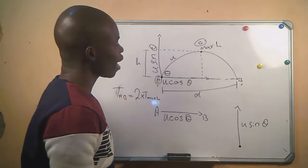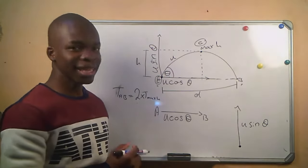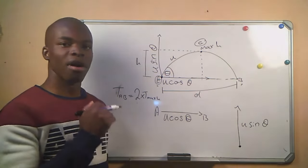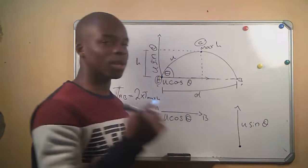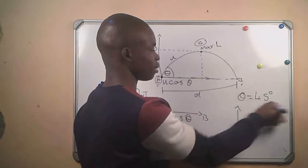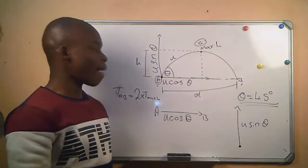Whenever you are given a question where they do not give you the angle and they say calculate the maximum distance, you must know that the angle will always be 45°. Whenever you are told to calculate for the maximum distance, 45° is the angle you are going to use. I have an exercise we can do to see how we apply these things.